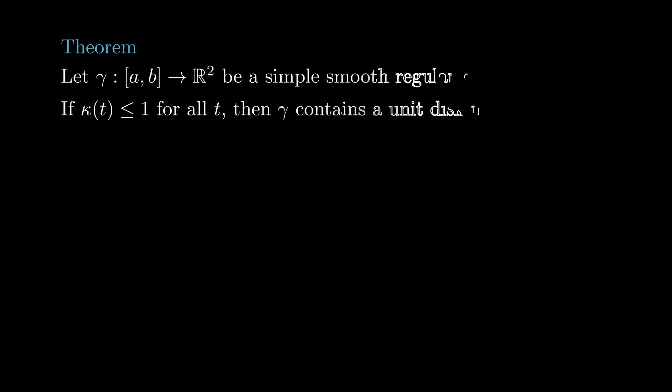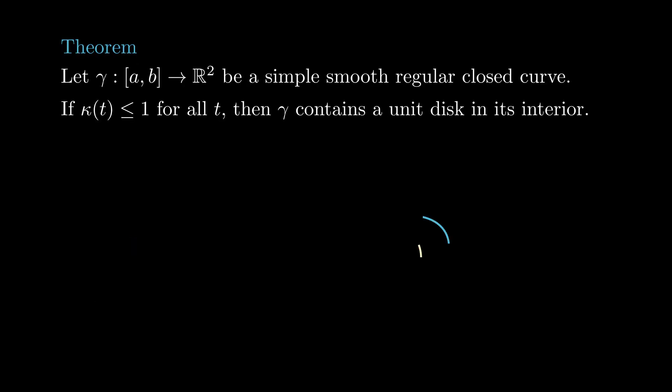Now we go back to the moon in a puddle theorem. We proved a couple of lessons ago that if we have a simple closed smooth regular curve in the plane with absolute curvature less than 1, then it contains a unit circle in its interior.